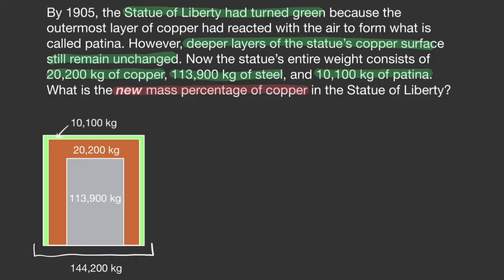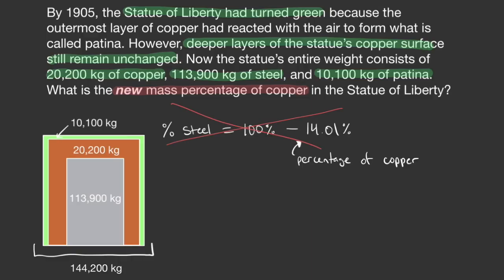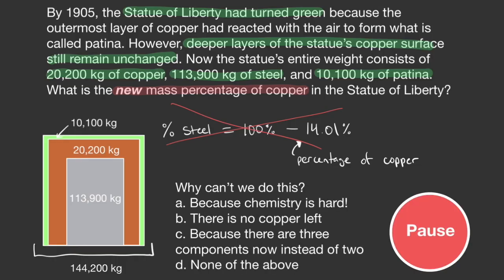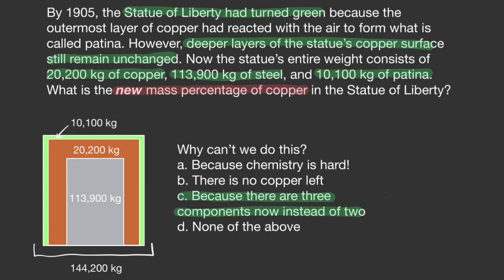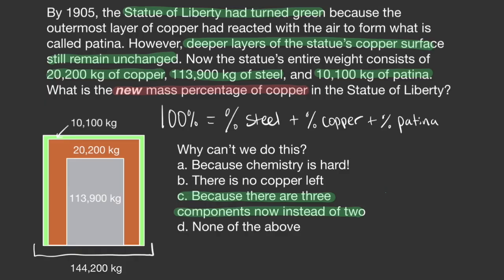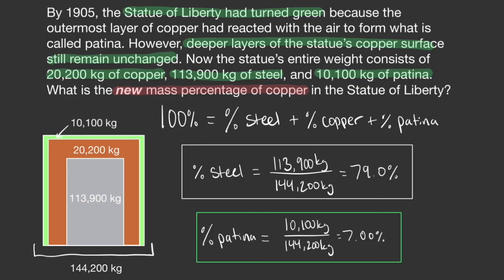One final note: getting the percentage of steel in the statue would not be as simple as taking 100% minus 14.0%, which is the percentage of copper. Why is that? With more than two components, the total mass percentage of 100% is the sum of the percentages of all the components. So 100% equals the percent of steel plus the percent of copper plus the percent of patina. You can solve for the percent of steel and the percent of patina in the same way that we solved for the percent of copper.